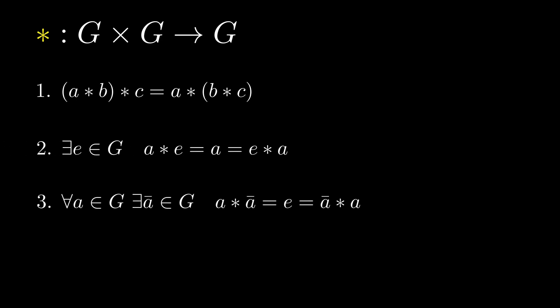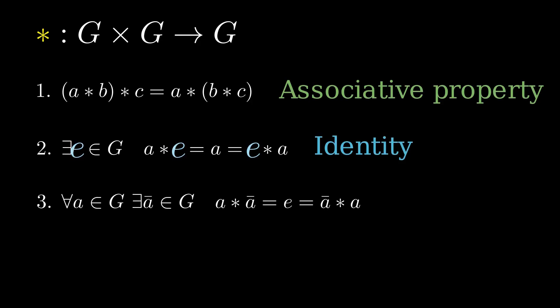First rule, associativity. If we have three elements, it doesn't matter where we put the parentheses. Second rule, the identity element. There exists a special element, let's call it E, such that combining it with any element doesn't change the result.